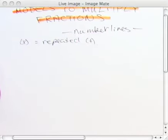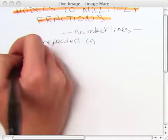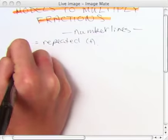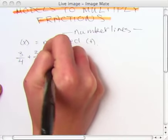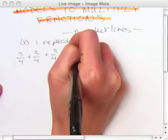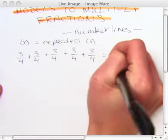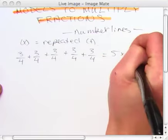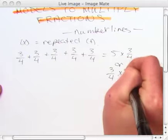We're going to start with the same equation that we used from last time. So 3/4 plus 3/4 plus 3/4 is the same as 5 times 3/4 or 3/4 times 5.